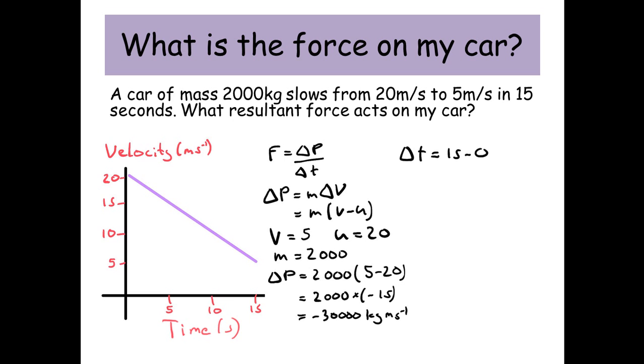Okay, but what about the change in time? Well, we've gone from 0 seconds to 15 seconds. So the change in time is 15 seconds. And then we just need to put that into our equation. So delta P, the change in momentum divided by the change in time. It's minus 30,000 divided by 15, which gives me minus 2,000 newtons.